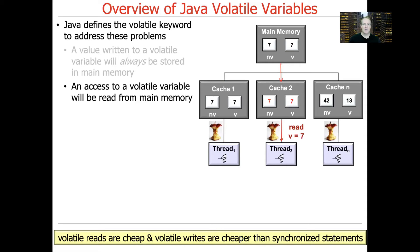Access to a volatile variable will always be read from main memory, not from the cache. The cache could be updated as a side effect of that read, but the key point is that you're reading from main memory. Volatile reads are cheap, and volatile writes are cheaper than synchronized statements — though not as cheap as volatile reads. Volatile is kind of a lightweight synchronized, if you want to think of it that way.